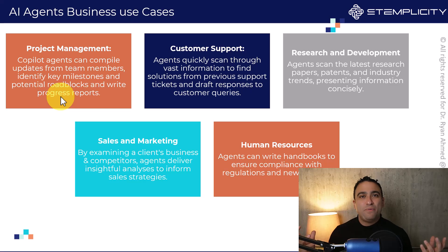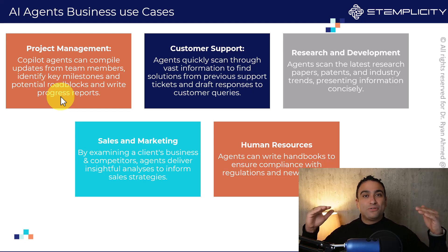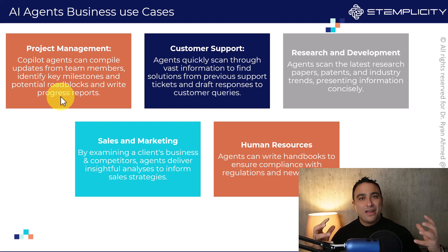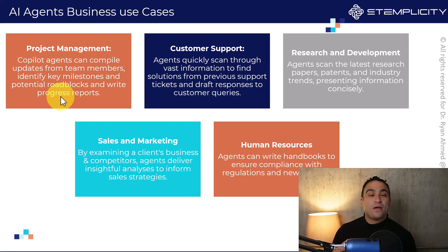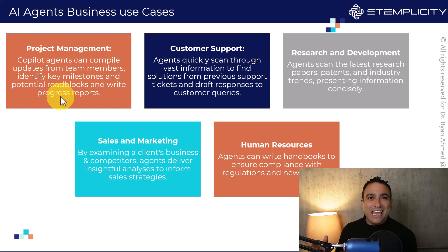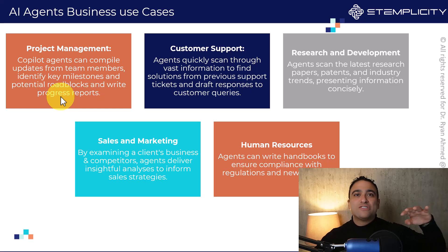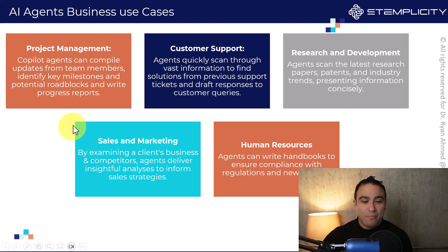These TPMs need to keep track of the progress of certain projects, follow up with team members, combine all that information, and provide progress reports. Now you can have an AI agent that can go and do all these tasks on your behalf, and you can focus on more strategic vision for your role or the company.